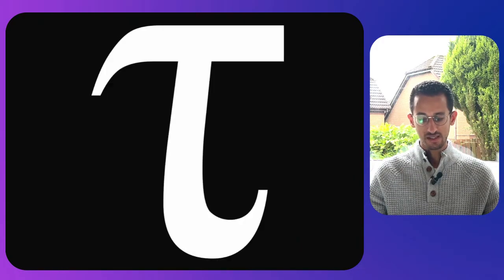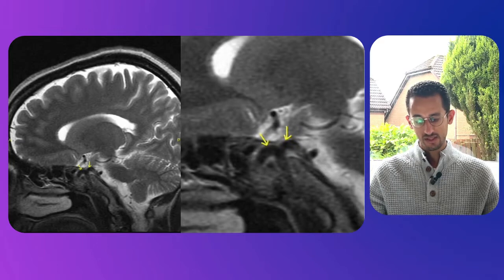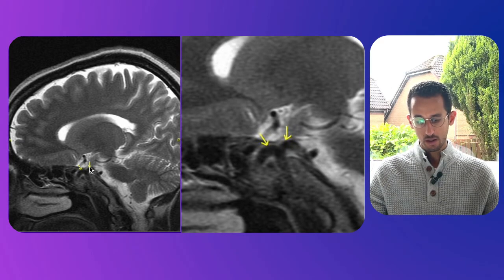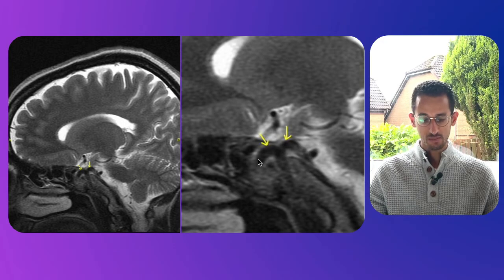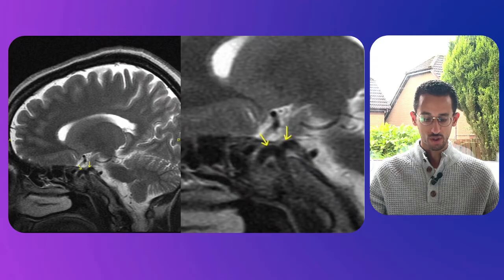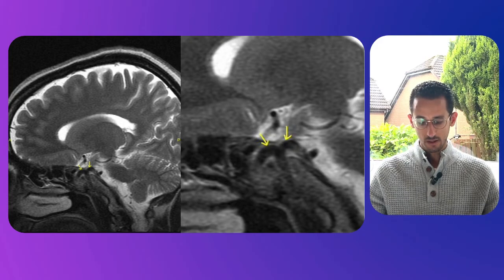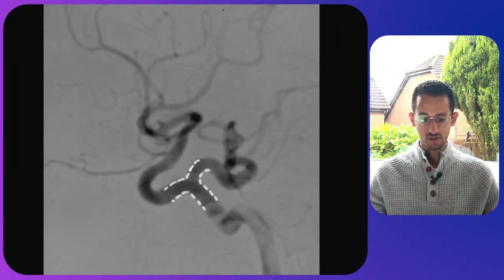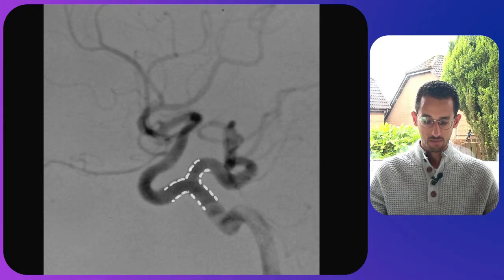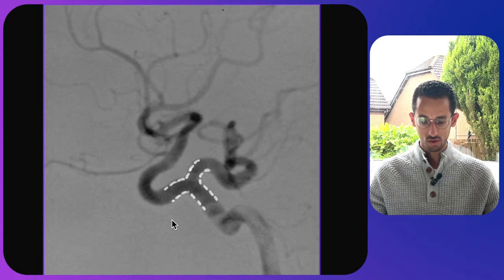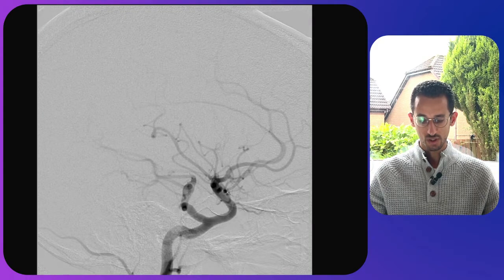The next sign is the tau sign. You can see it on this MRI scan — a T-shaped or tau sign — and this represents a persistent trigeminal artery, also called a persistent primitive trigeminal artery. It appears on the sagittal MRI or MR angiogram. You can also see this shape clearly in cerebral angiography, where the tau sign is obvious in a persistent trigeminal artery.